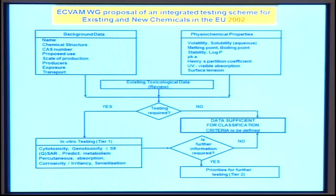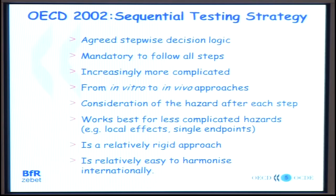Integrated testing means taking into account background data, physical-chemical data, and existing human data for existing chemicals, then asking: do we need any testing, or can we classify? If testing is needed, you do in vitro assays first, and only use animal tests in the end. This was the idea in 2002. To get in vitro assays accepted at the OECD level, my colleague Manfred Lieb spent one year at the OECD, and we came up with all kinds of ideas, including the first four in vitro assays accepted for regulatory purposes. Even then, the OECD brought up the sequential testing strategy.